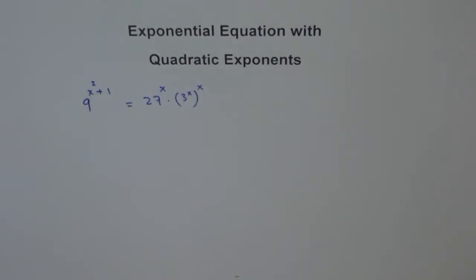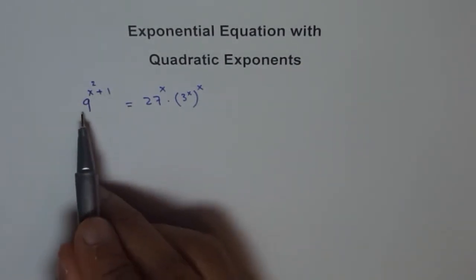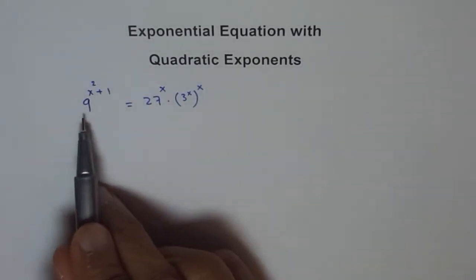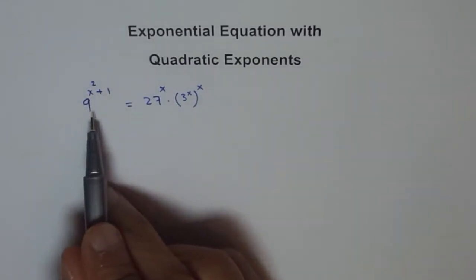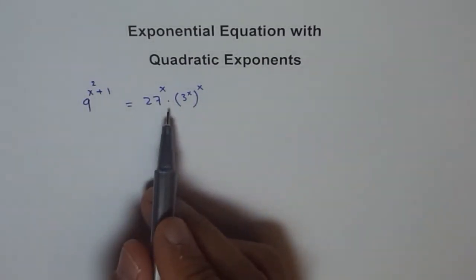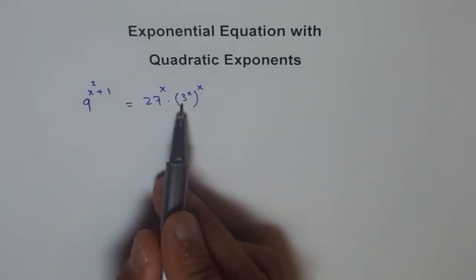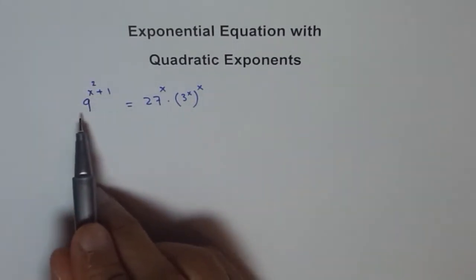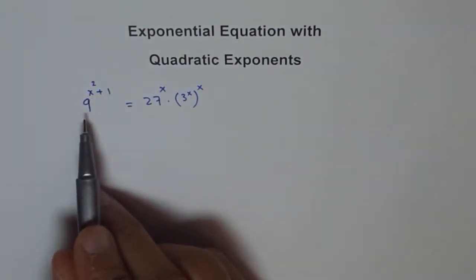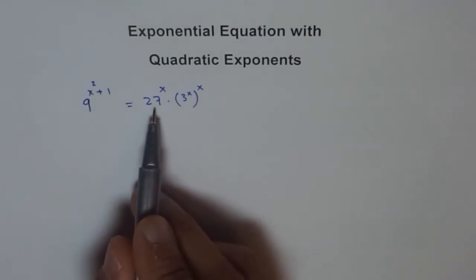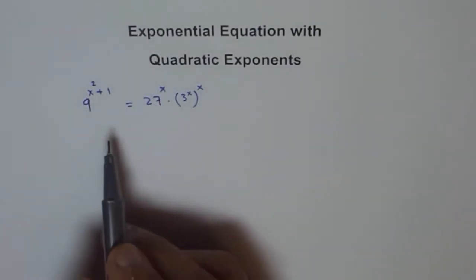Now, to solve this kind of problem, we need to find the common base on both sides. Once we do that, we can easily solve the problem. It seems that 3 could be a common base. So, let us write 9 in terms of 3, and 27 also in terms of 3.